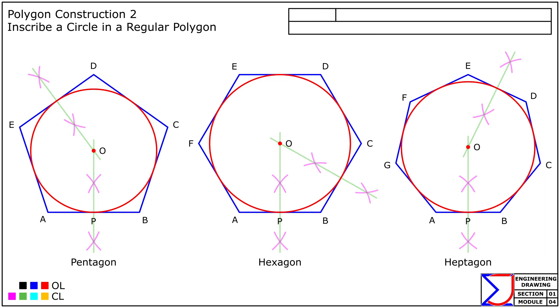This approach to inscribing a circle within a regular polygon is simple and reliable. By using side bisectors, we can accurately locate the circle center, and drawing the perpendicular ensures the circle perfectly fits within the polygon.